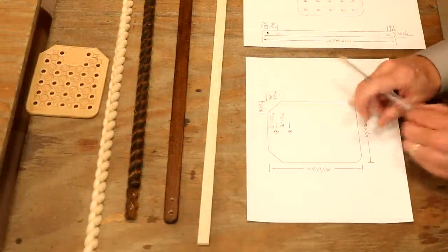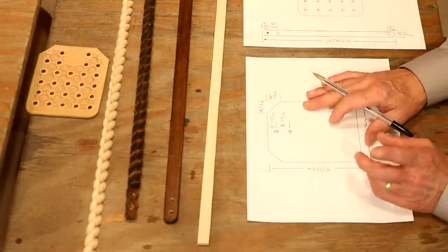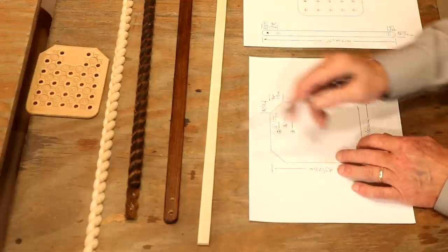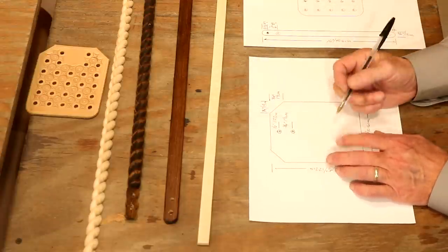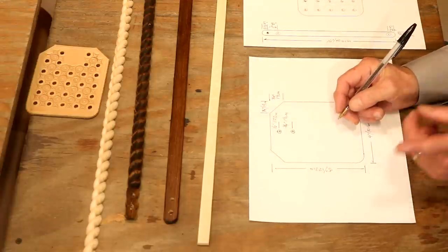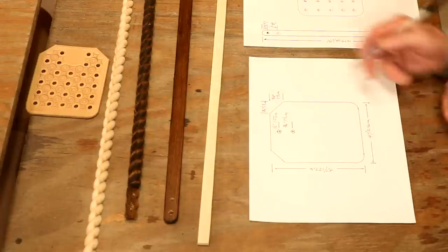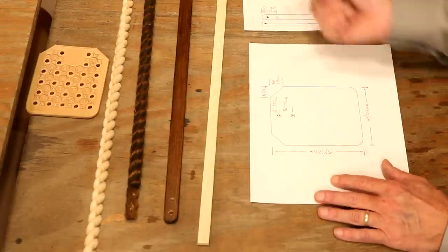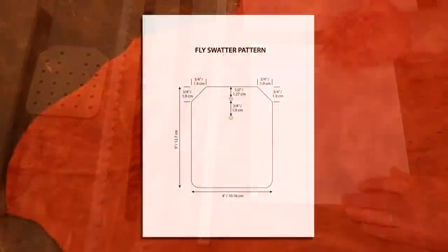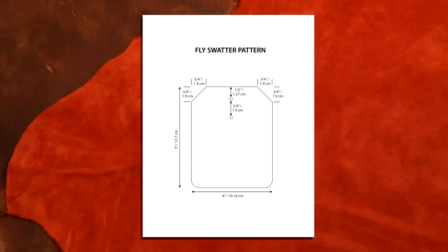We're going to make a simple fly swatter. It's going to be effective and helpful, but then we're going to backtrack and create a fly swatter that would only come from a true leather shop. On our main body here, outside dimensions are five inches by four inches, or about 12.7 centimeters by 10.16 centimeters.